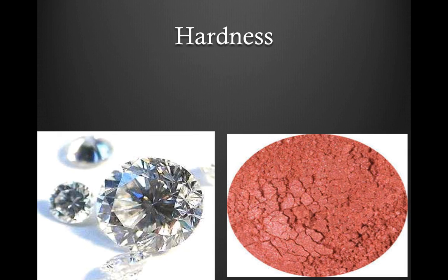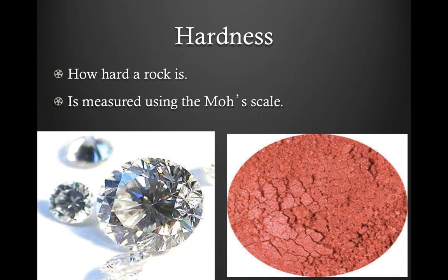Hardness is simply how hard a rock is — and that's measured on the Mohs scale. The Mohs scale is a tool geologists use to determine a rock's hardness. For example, sandstone is a very soft rock with a low number on the Mohs scale. Diamond, on the other hand, is one of the hardest minerals found on earth — which is part of why diamonds are so valuable.